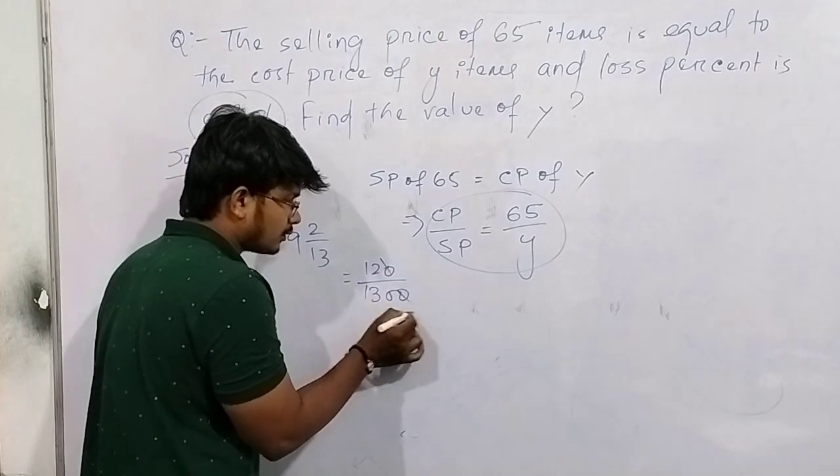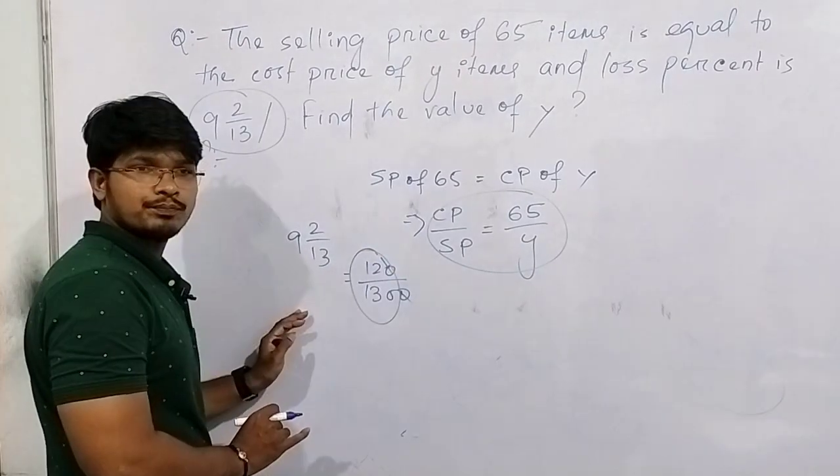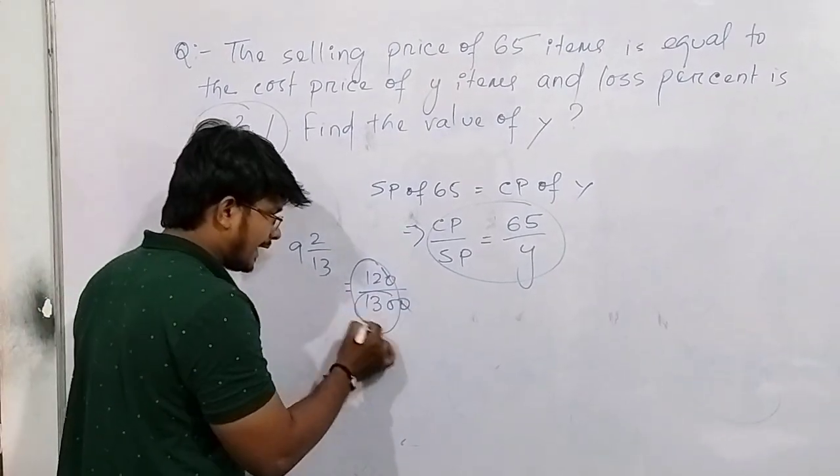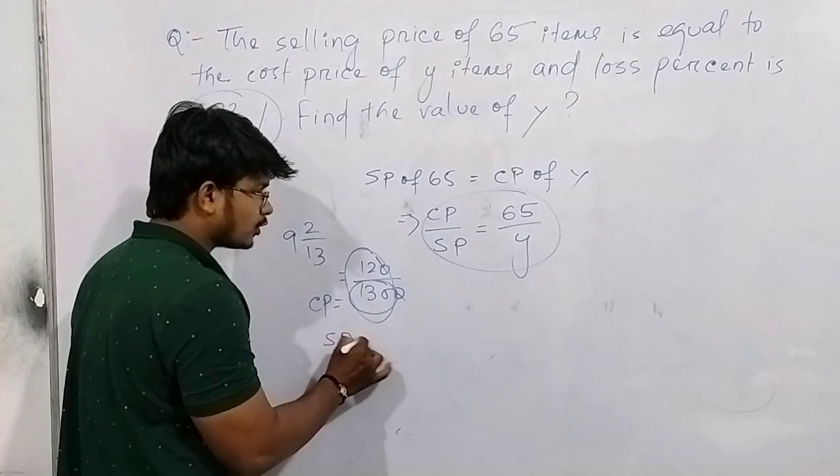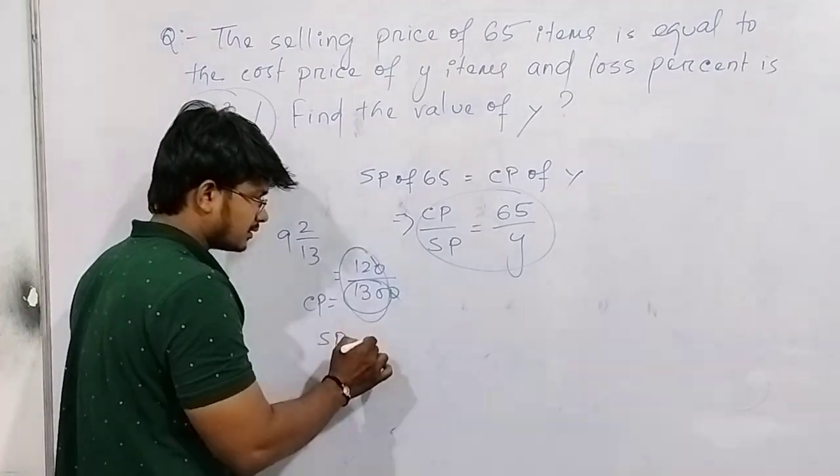Calculate the ratio, it becomes 12 by 130. So when your CP is 130, SP is how much? In loss, this minus this gives you 118.